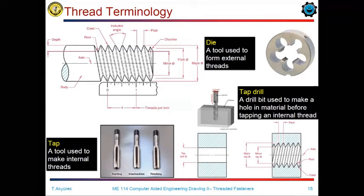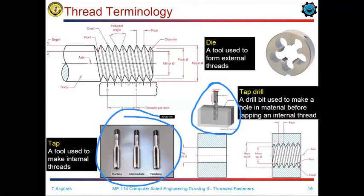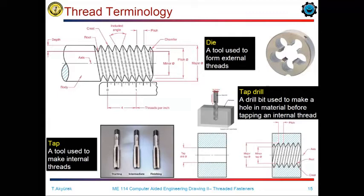For forming external threads, we use three different methods. The first one is the turning tool, the second one is the rolling tool, and the third one is the die, which we use to create threads on a shaft part. You can also watch the video links in the description for these external thread creation methods. For internal threads, we have two ways. First, drilling a hole and adding a thread with a tap tool. As a second way, if the hole or the internal thread is big enough, it can be machined on a lathe machine.